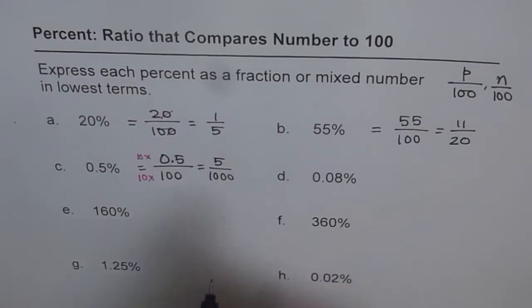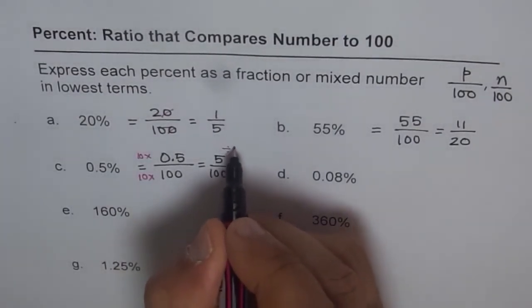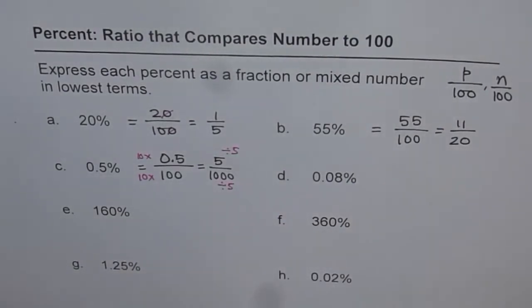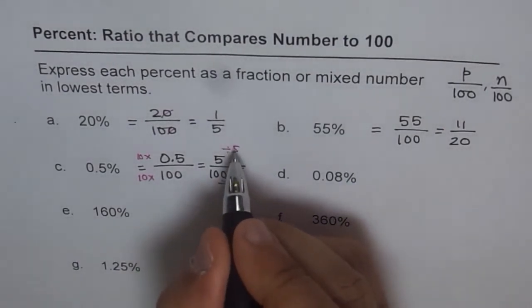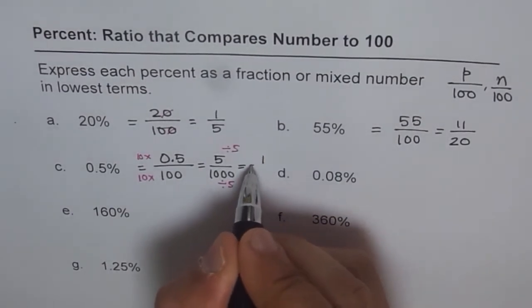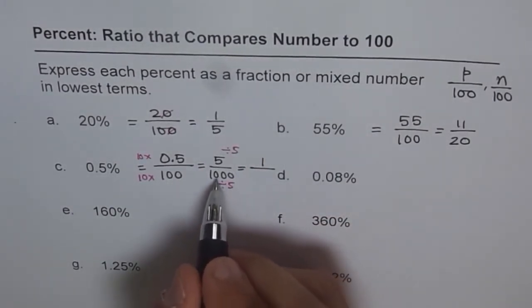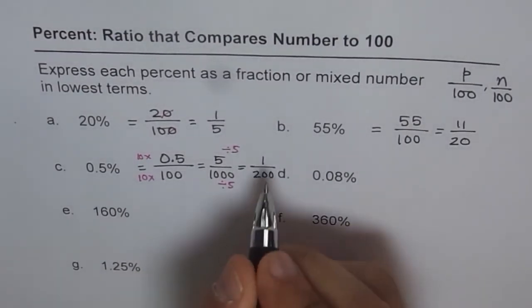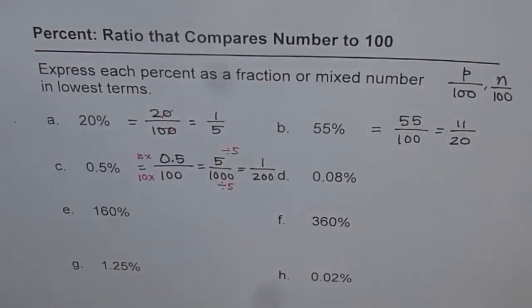Now, we have 5 over 1000. Both can be divided by 5. So let's divide them by 5. We'll divide both by 5. When we do that, what do we get? We get 5 divided by 5 as 1, and 1000 divided by 5, 5 goes 2 times in 10 and then 100. So we get 1 over 200. That is the answer.